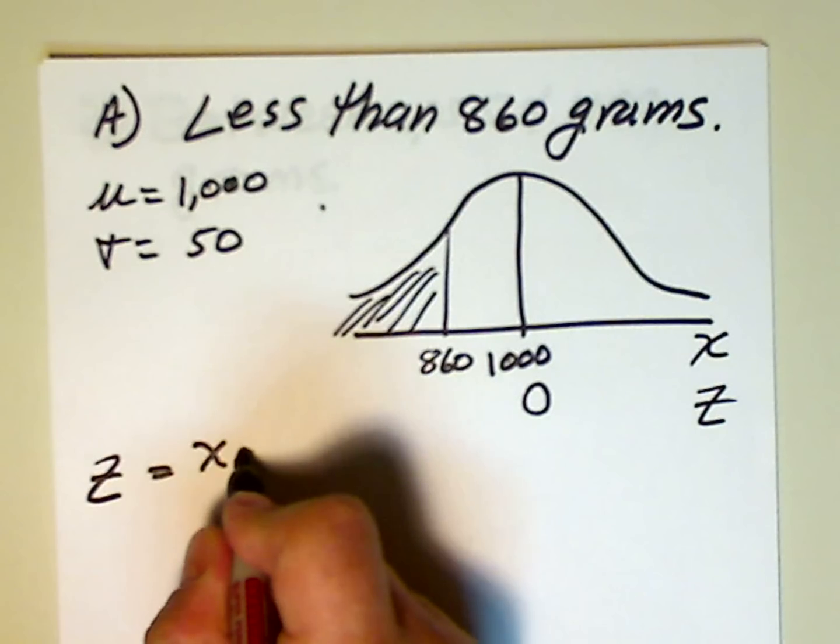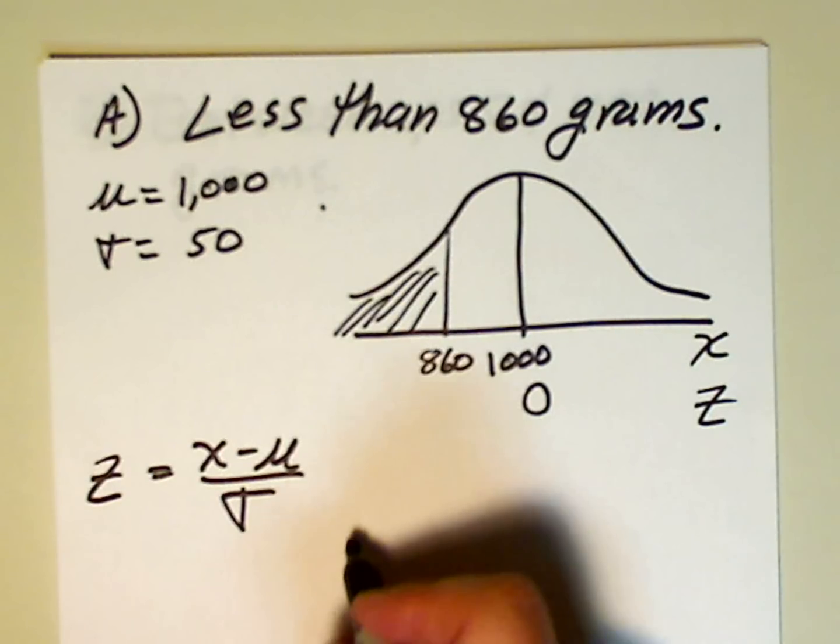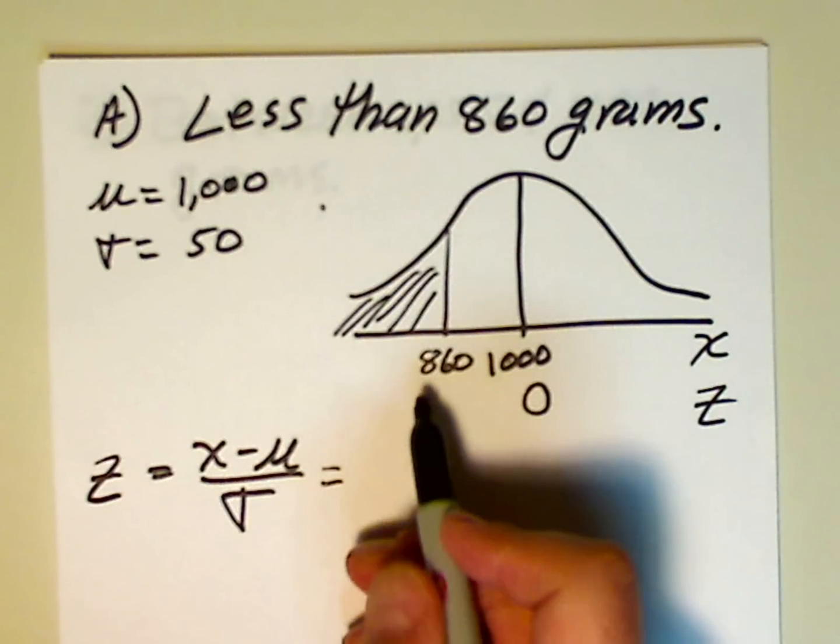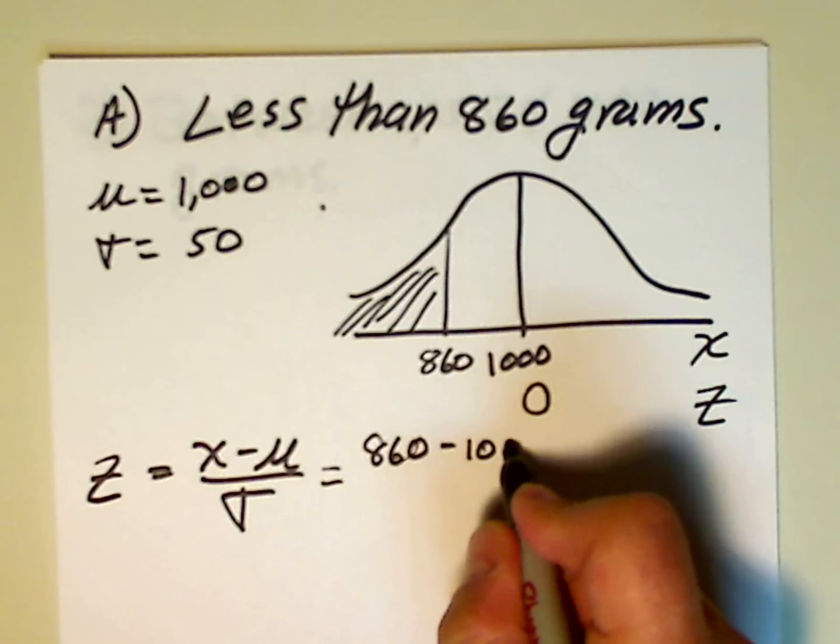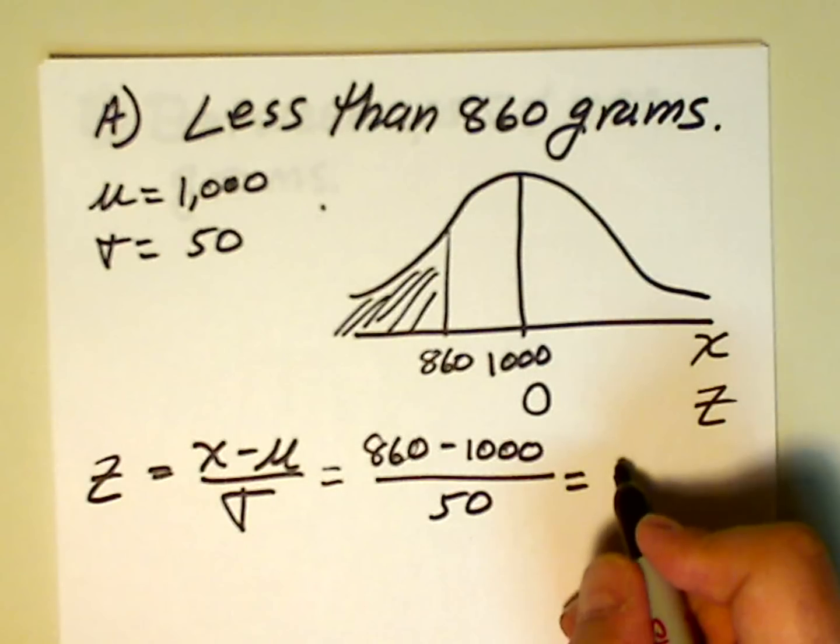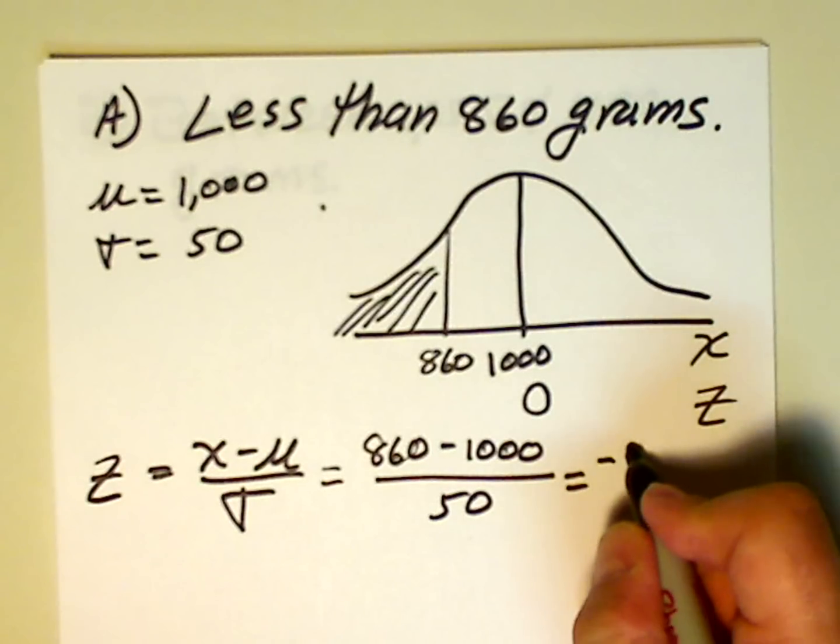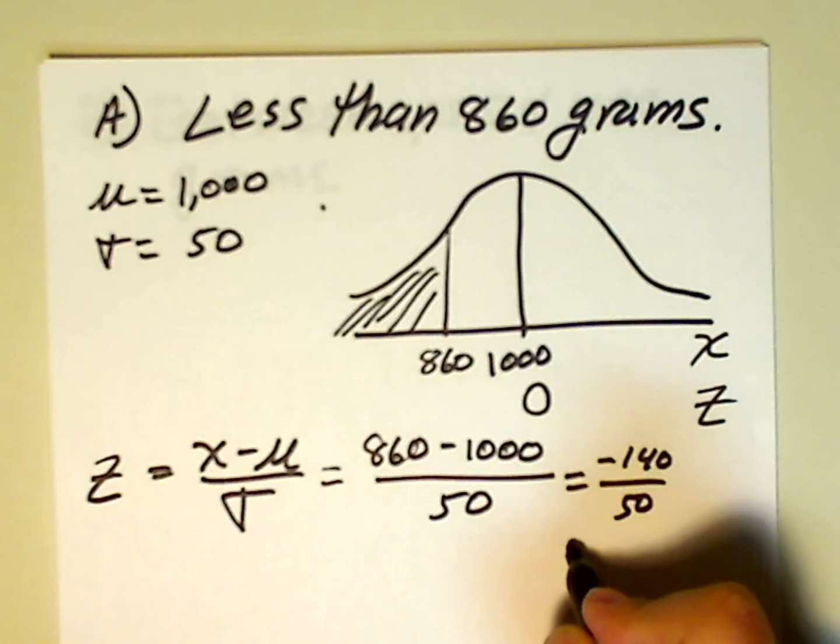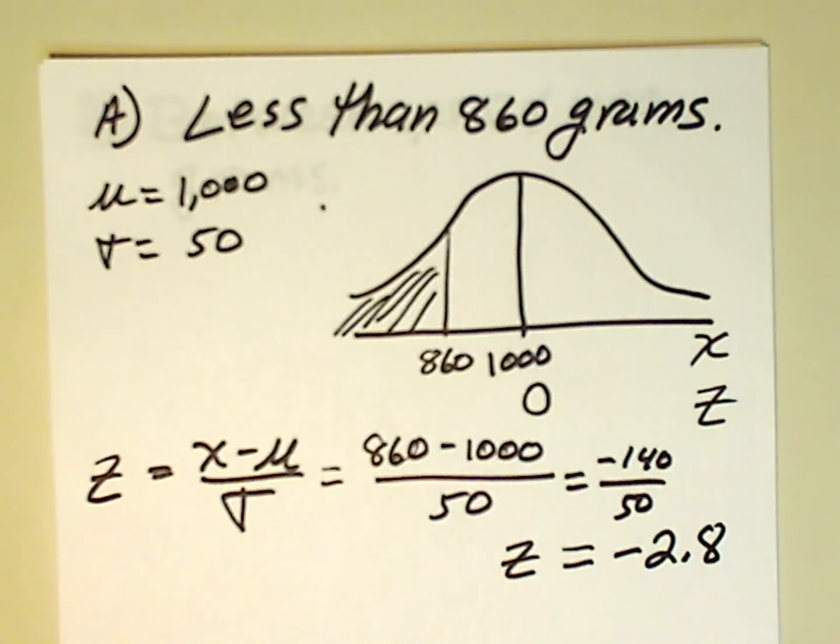z is equal to x minus mu over sigma. That's our formula for the transformation. Our x value is 860. We're going to subtract off the mean and divide it by the standard deviation. So, this works out to be negative 140 over 50. And that makes it negative, z is equal to negative 2.8.